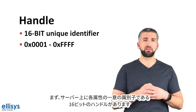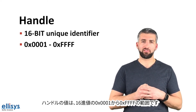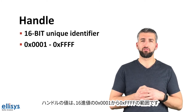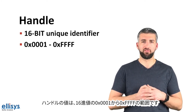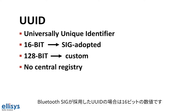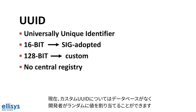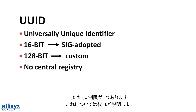First we have the handle, which is a 16-bit unique identifier for each of the attributes on the server. The handle has a value that ranges between the hex values of 0x0001 and 0xFFFF. Next we have the UUID, or the attribute type. UUID stands for Universally Unique Identifier. It's a 16-bit number in the case of a Bluetooth SIG adopted UUID, and 128 bits in the case of a custom UUID defined by a developer or manufacturer. There is no central database for UUIDs, so developers looking to create their own can randomly assign a value, with one restriction we'll talk about shortly.